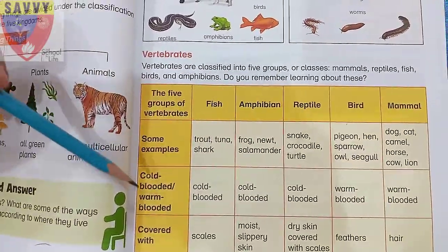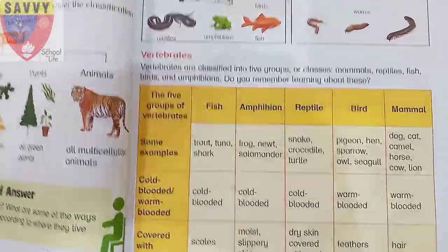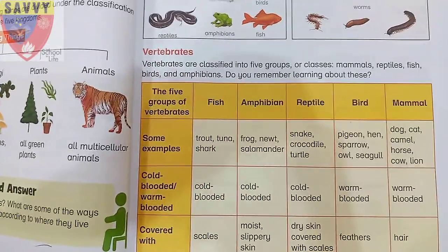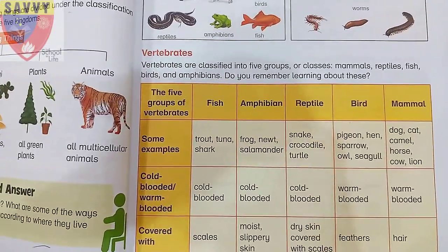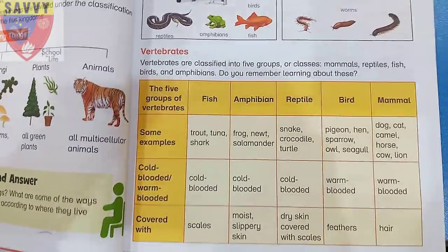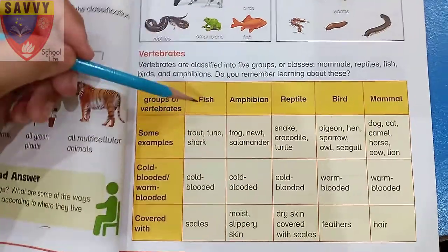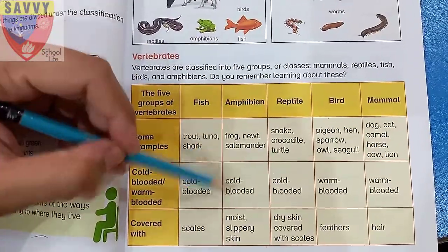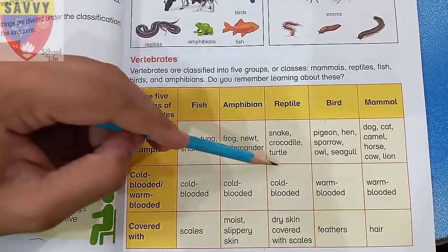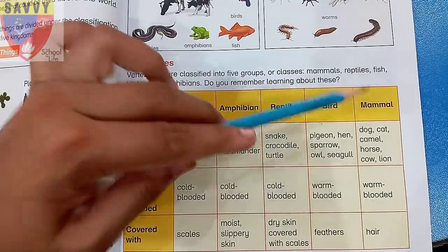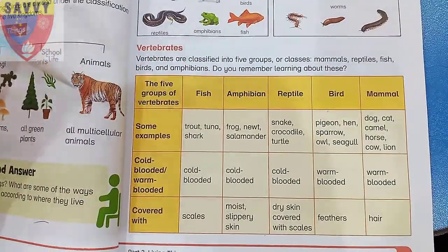Now we need to know which animals are cold-blooded and which are warm-blooded. Fish, amphibians, and reptiles are cold-blooded. Birds and mammals are warm-blooded.